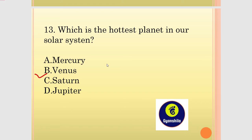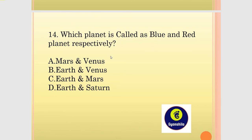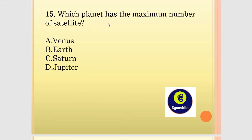The hottest planet in our solar system is also Venus. Which planet is called the blue planet and the red planet respectively? The blue planet is Earth and the red planet is Mars. Which planet has the maximum number of satellites? That planet is Saturn.